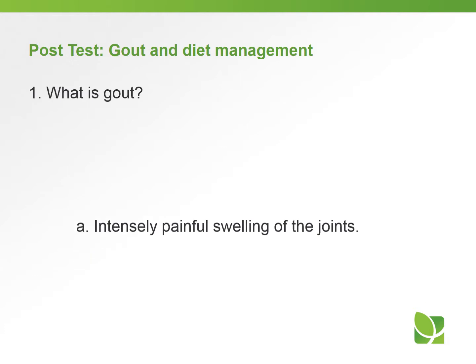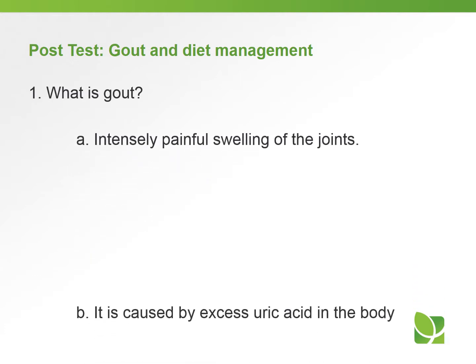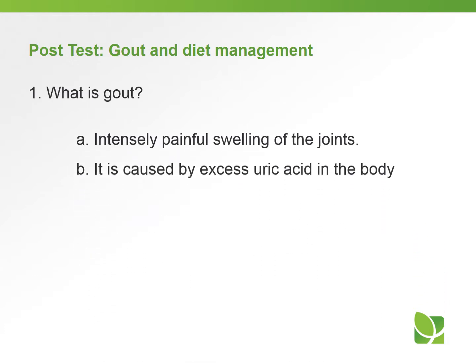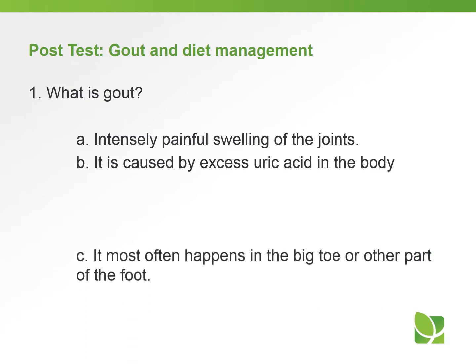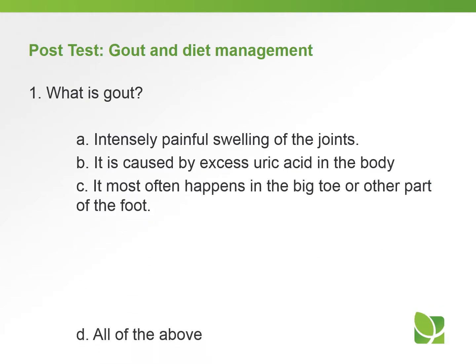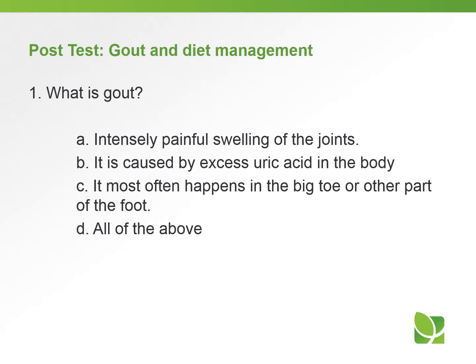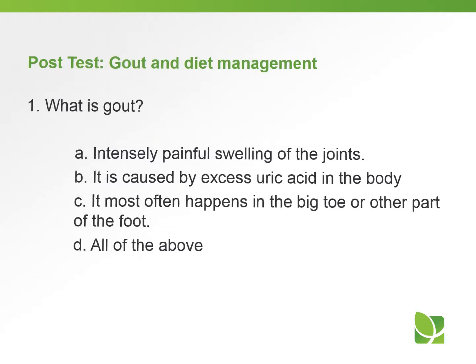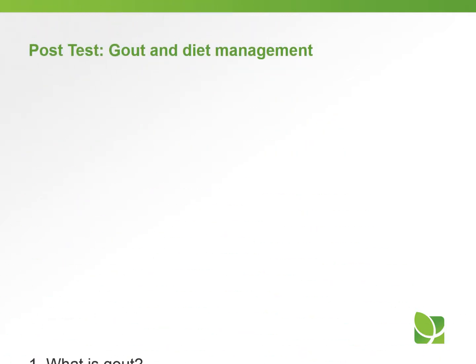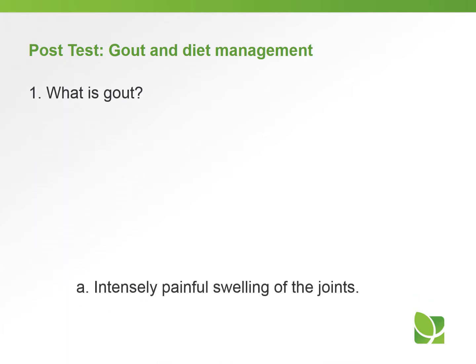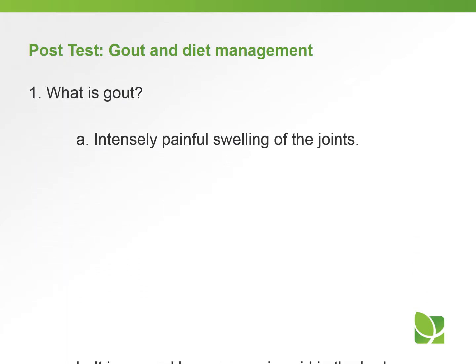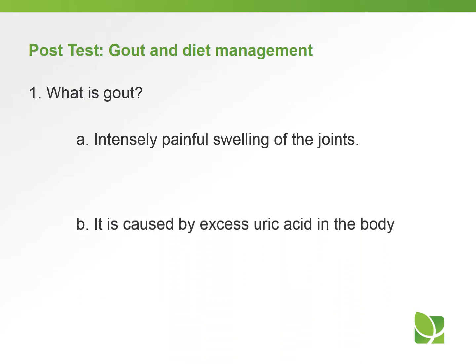Let's take a short quiz on gout and diet management. Question number one: What is gout? A, intensely painful swelling of the joints. B, it's caused by excess uric acid in the body. C, it most often happens in the big toe or other part of the foot. Or D, all of the above. The answer to question number one is D, all of the above.